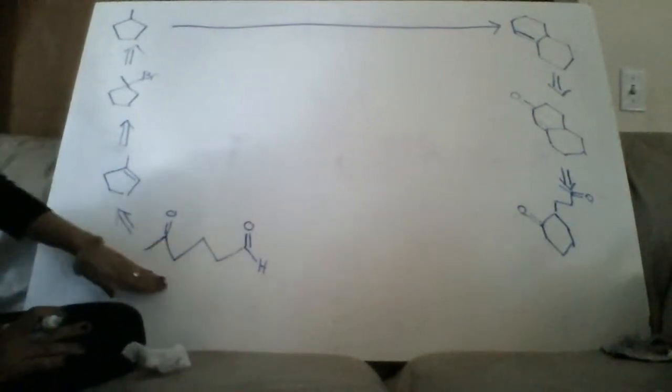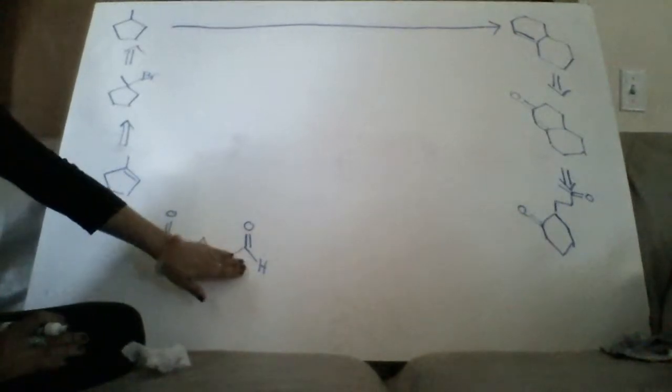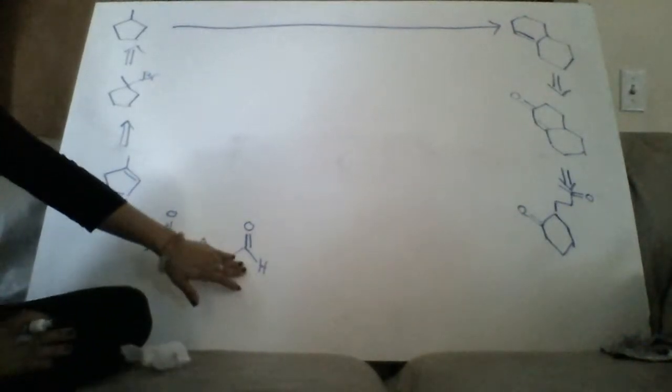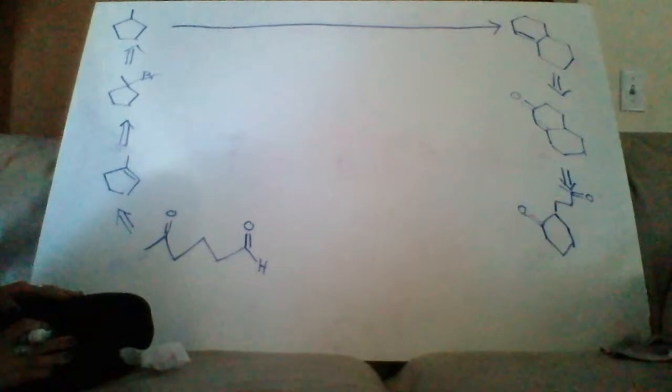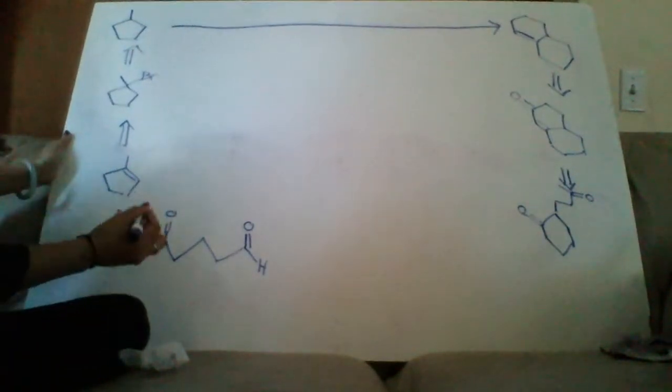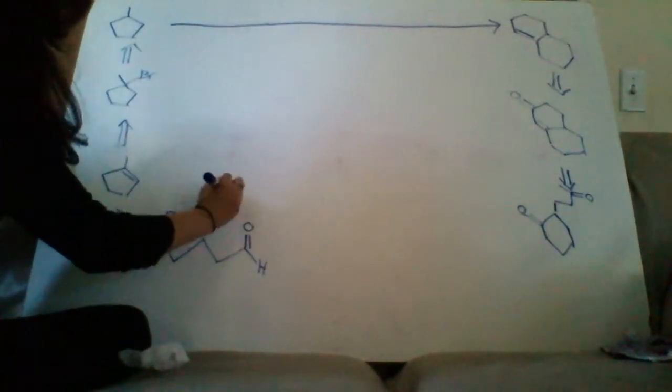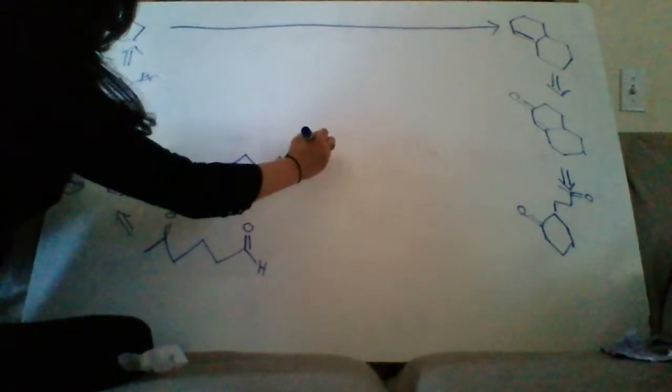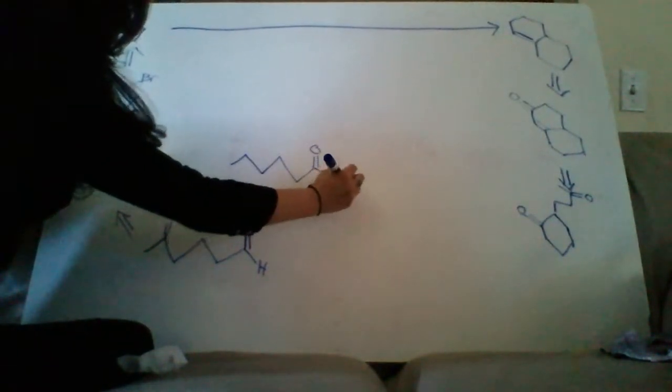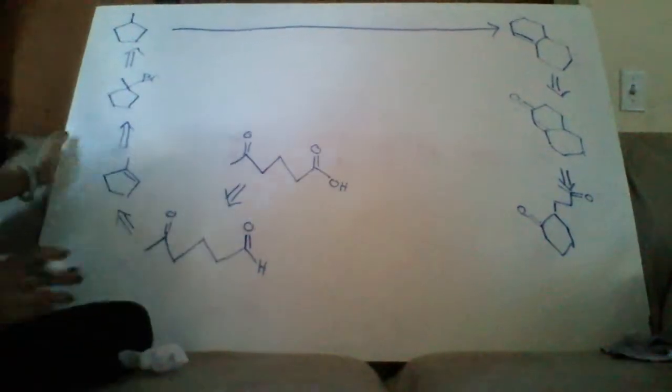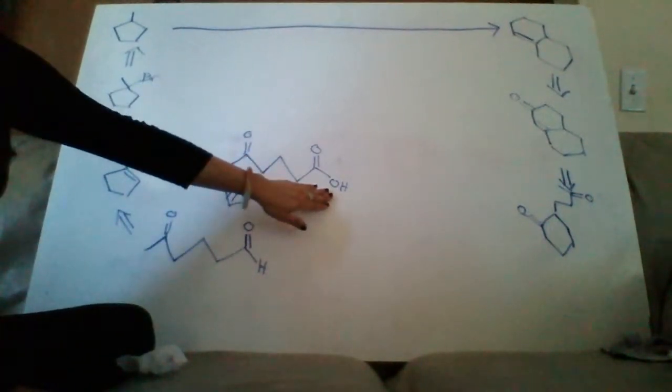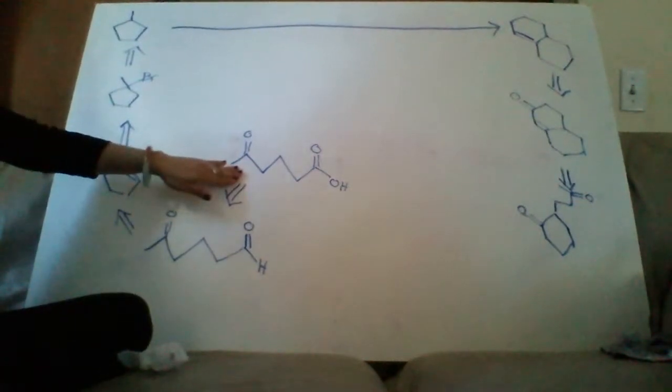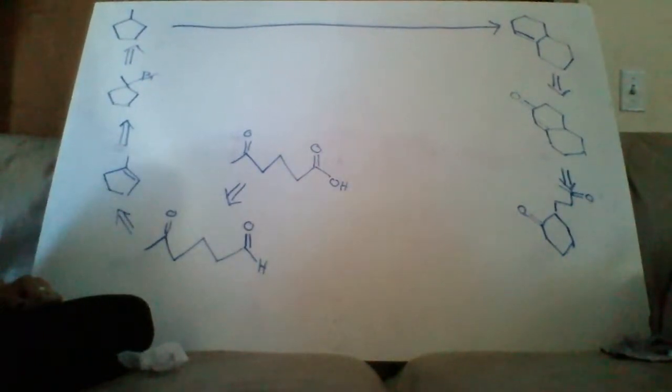I can't do much with this so far but if I turn the aldehyde into a carboxylic acid maybe I could do something with that. So I'm going to go this direction. So I'm going to use Jones reagent turning the aldehyde into a carboxylic acid and that's not going to do anything with this ketone which is good.